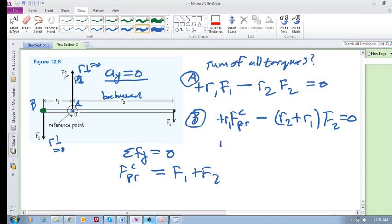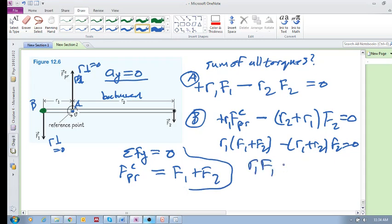You're going to get R1(F1 + F2) minus (R1 + R2)F2 equals zero. And if you wave your magic wand, you will see that this equals R1F1 minus R2F2 - it is the same as this.